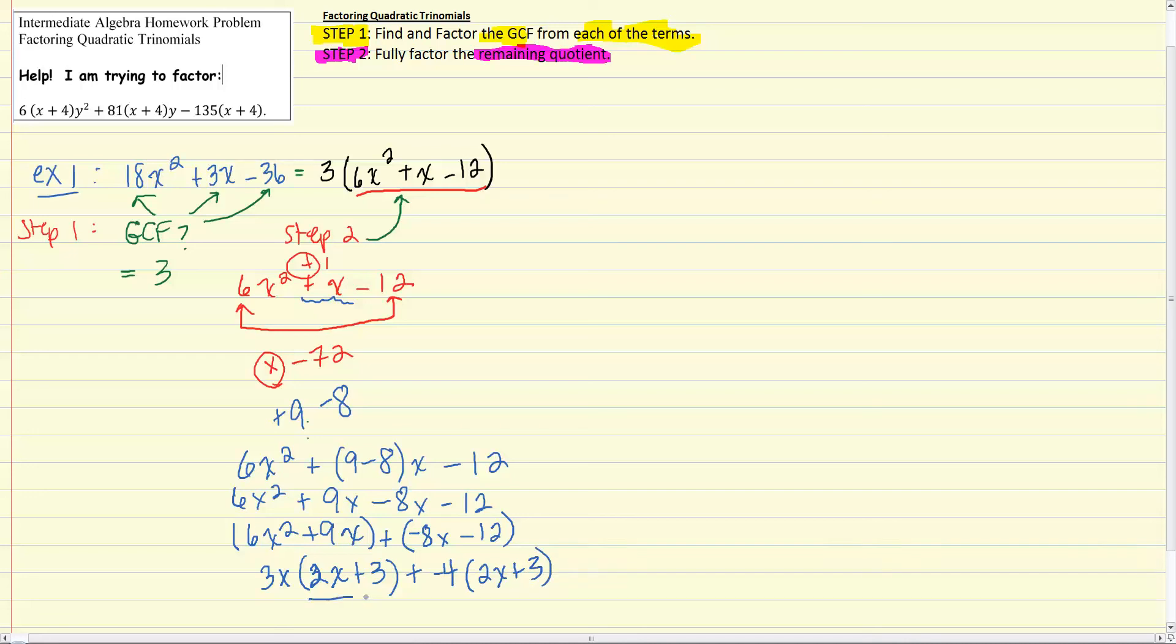And then just factor out the 2x plus 3. And that leaves us with 3x minus 4. Which means that our 3 times the quantity 6x squared plus x minus 12 is really just equal to 3 times 2x plus 3 times 3x minus 4. And that's our answer. Pretty straightforward, especially once you are able to split the middle.